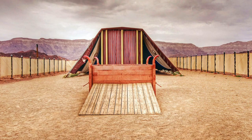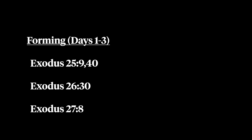In Exodus chapters 25 to 31, we see two sets of phrases dividing the construction of the tabernacle: pattern phrases and ordinance or generation phrases. The pattern phrases, which occur in the first half — in chapter 25 verses 9 and 40, chapter 26 verse 30, and chapter 27 verse 8 — all refer to the forming stage of the new creation.